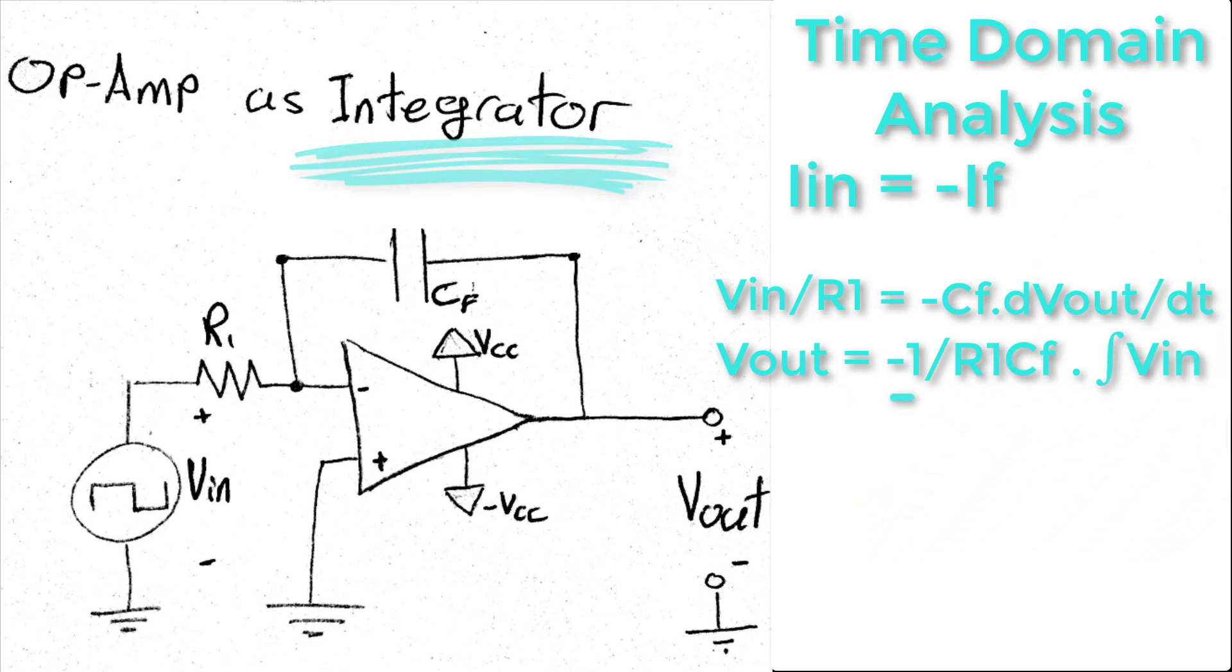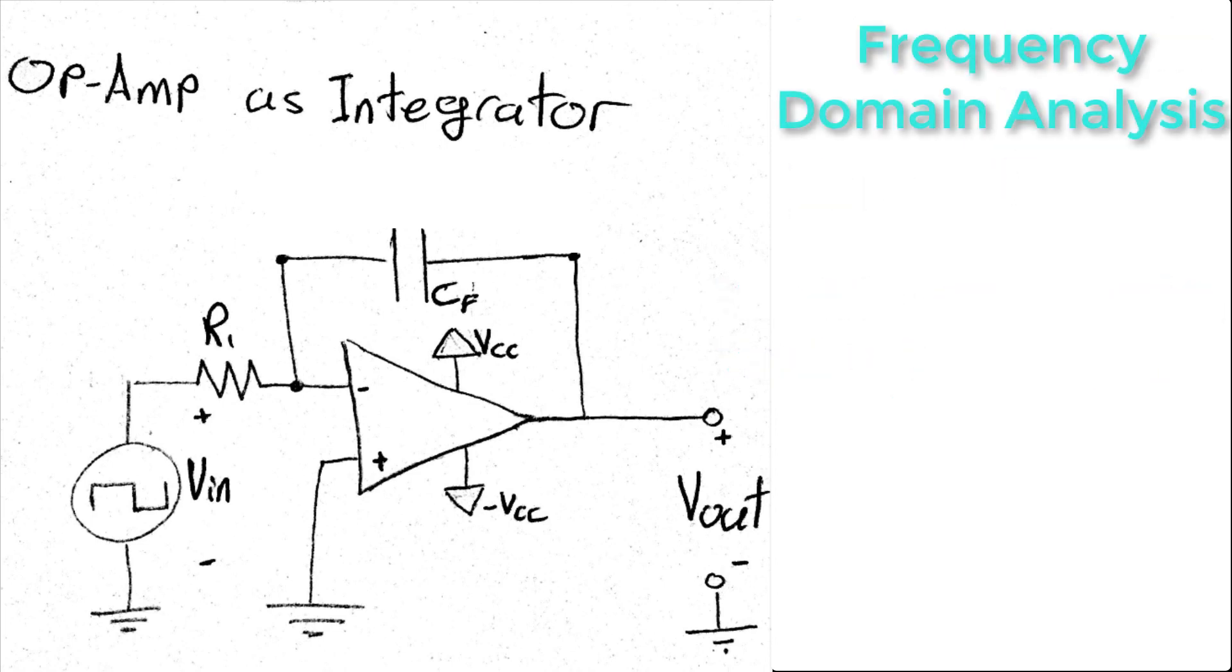But hold on, what is this something then? Well, to make things clear, it's better to analyze this circuit in frequency domain instead of time domain. All we need to do is to use the feedback capacitor reactance, and using the same procedure, we can get the ratio Vout to Vin, which will form the op-amp gain.